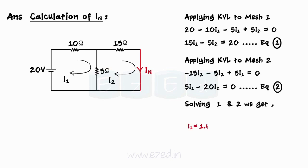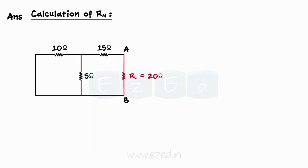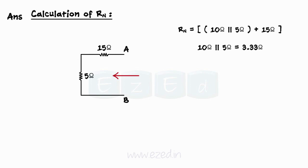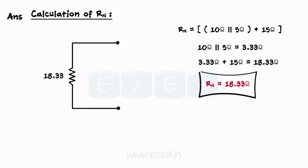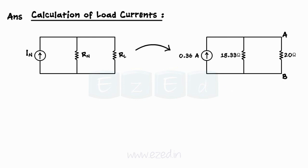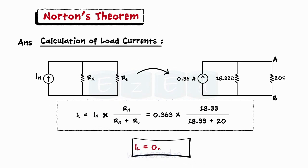Norton's equivalent resistance is calculated by removing the load resistance and looking inside the network from branch AB. We get the 10 Ohms resistor in parallel with 5 Ohms, and their equivalent in series with 15 Ohms, giving Rn as 18.33 Ohms. We then draw the Norton's equivalent circuit and calculate the branch current using the current divider formula: IL equals IN times Rn upon (Rn plus RL), which comes out to be 0.1735 Amperes.